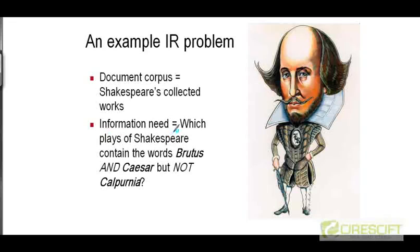Now let's assume that you have an information need. You want to find out which plays of Shakespeare contain the words Brutus and Caesar but not Calpurnia. We are going to try and build an information retrieval system from the ground up which will try to answer questions of this form — that is, it's going to return the names of the plays which contain Brutus and Caesar but which don't contain the name Calpurnia. Calpurnia was the wife of Caesar.